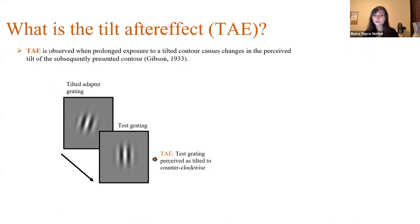Tilt after effect is observed when prolonged exposure to a tilted contour causes change in the perceived tilt of the subsequently presented contour. For example, if you adapt to this tilted grating which is tilted clockwise and then you see this straight contour, most probably you will perceive the straight contour tilted to the opposite direction as a result of the orientation adaptation.